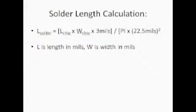Calculate the amount of solder required to achieve a 3 mil layer of solder under the chip. The length of the solder is equal to the quantity of the length of the chip times the width of the chip times 3 mils divided by the quantity pi times 22.5 mils squared.